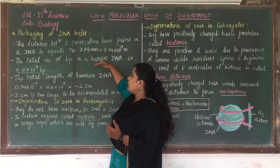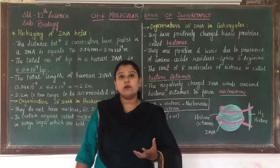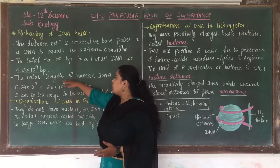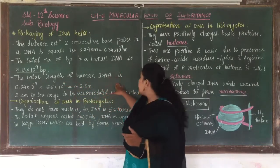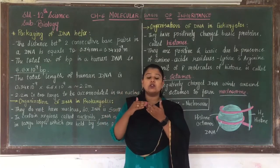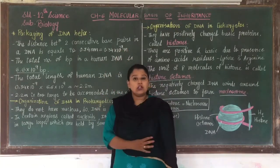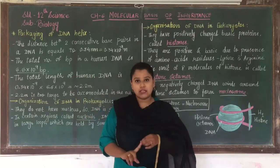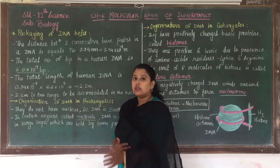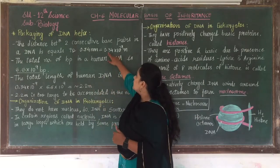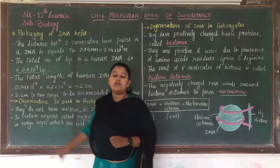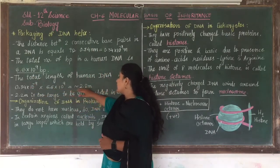If asked what is the total number of base pairs present in humans, it is 6.6 × 10⁹ base pairs. We know the distance between two consecutive base pairs and the total number of base pairs, so we can find the exact length of DNA. Total length = 0.34 × 10⁻⁹ m × 6.6 × 10⁹ = approximately 2.2 meters.